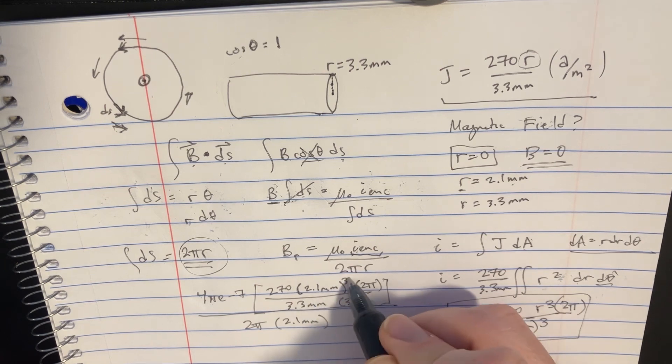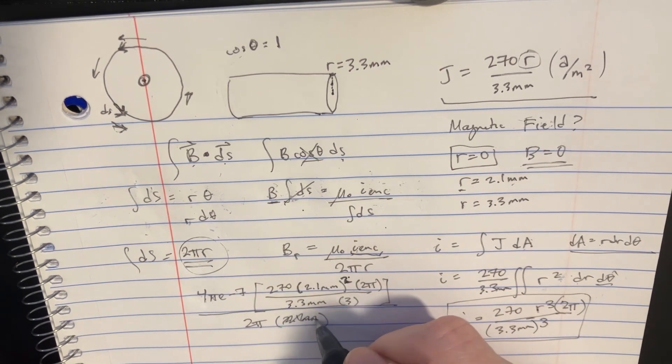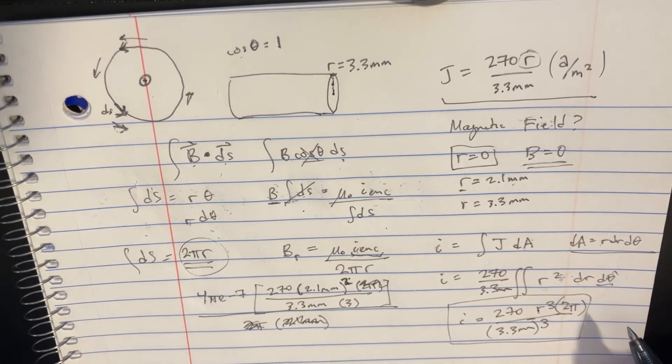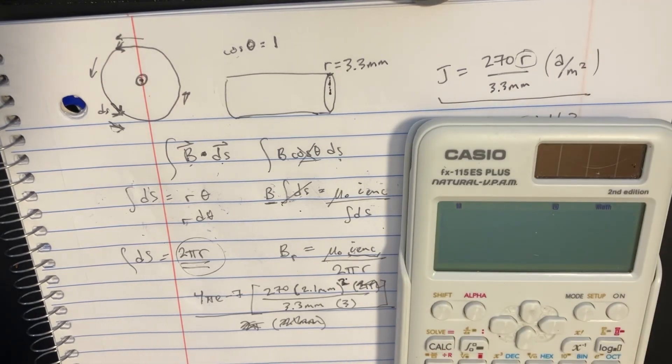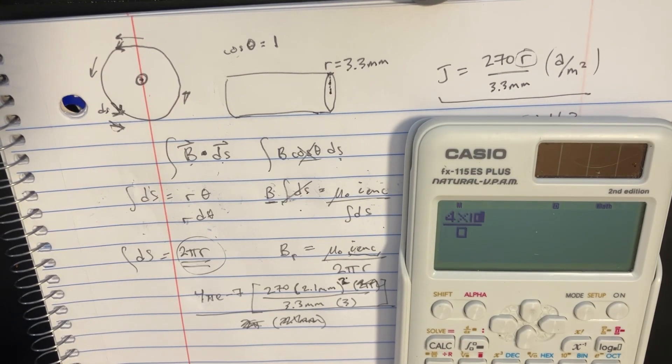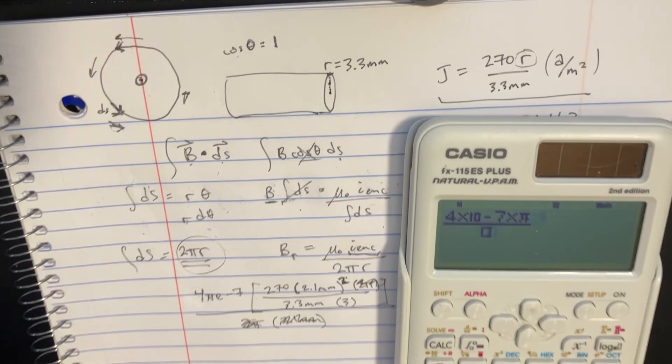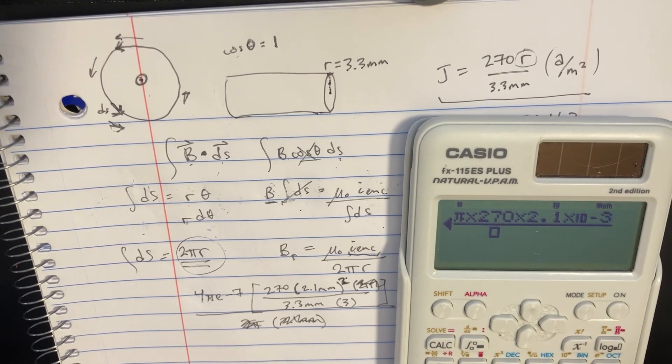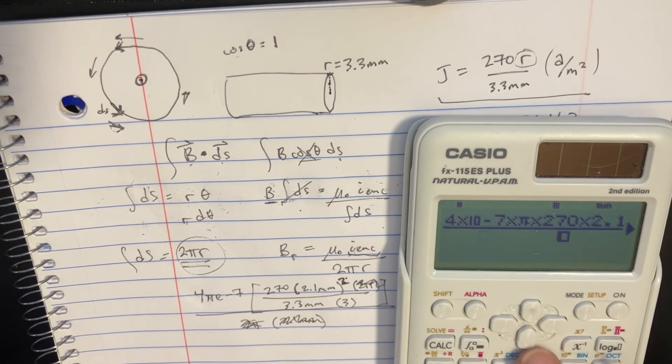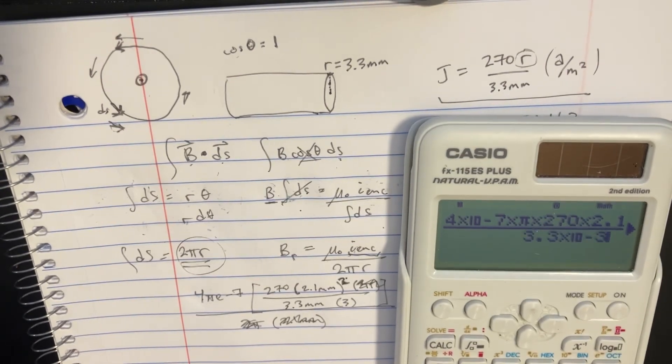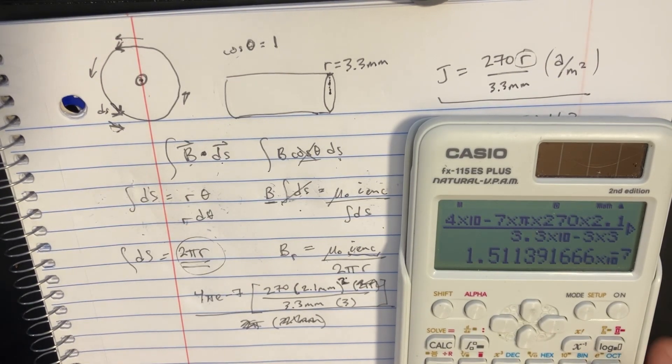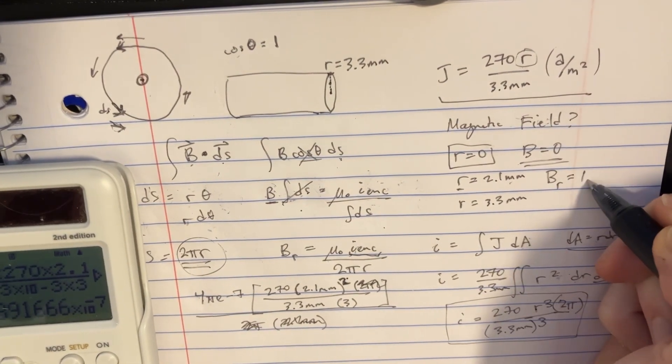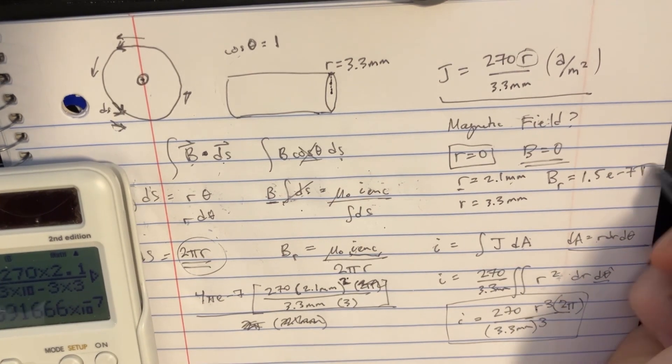And then we can divide this whole thing by 2 pi and the 2.1 millimeter radius that we chose. These things can technically cancel out. This can become a 2. This can go away. You know, there's a 2 pi here and 2 pi there. So let's try to answer this one here. We'll say 4 times 10 to the negative 7 times pi times 270 times 2.1 times 10 to the negative 3 squared. And then we can even divide this by 3.3 times 10 to the negative 3 times 3. And so this first one right here is going to be B at that particular radius equals 1.5 times 10 to the negative 7 tesla.